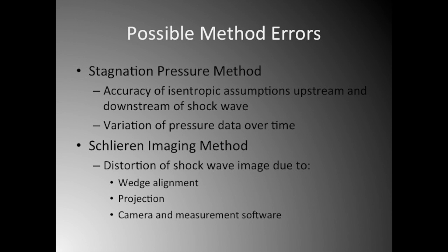Now let's move on to issues with the Schlieren imaging method. Although these images are direct depictions of nature, there are things that can distort the shockwave images. The first is wedge alignment: if the wedge is not aligned parallel to the wind tunnel flow, images will show skewed shockwave angles from the side. Another issue is projection: if the images are not projected perpendicular to the wall, they will be skewed. The camera and measurement software may also introduce errors, which will skew the angles and keep us from finding the correct Mach number.